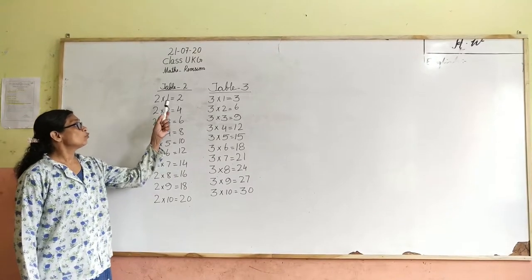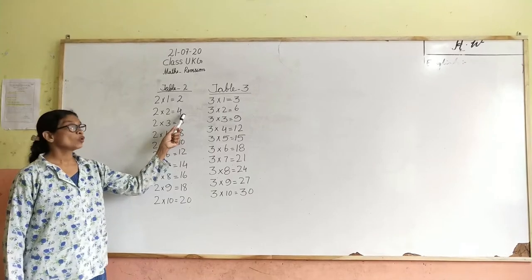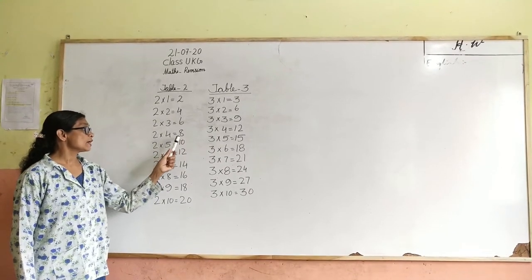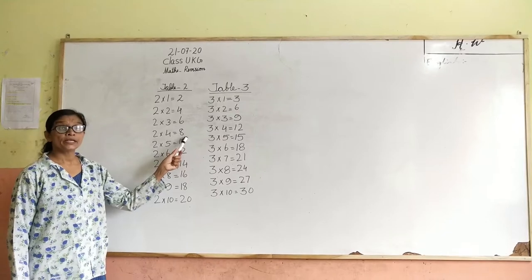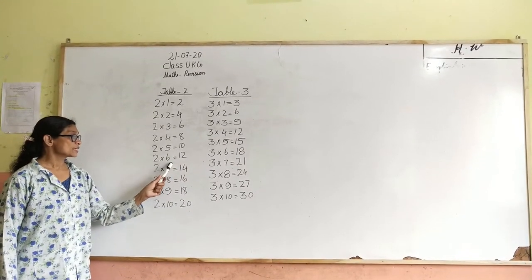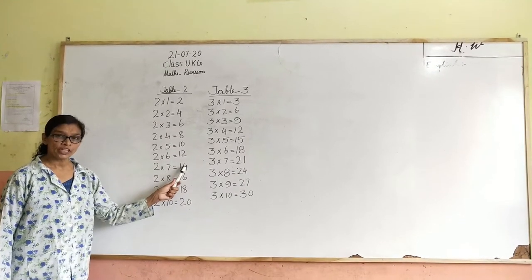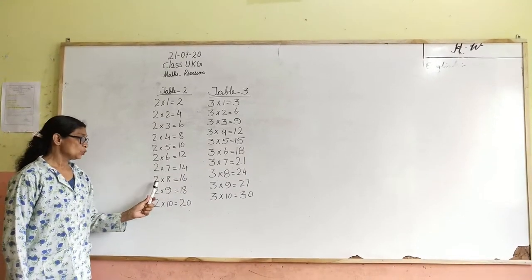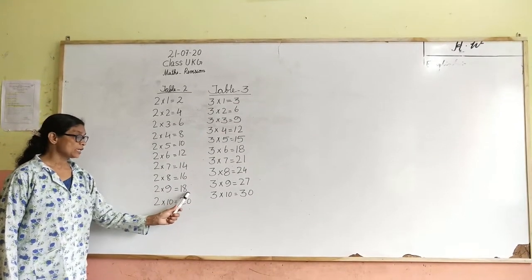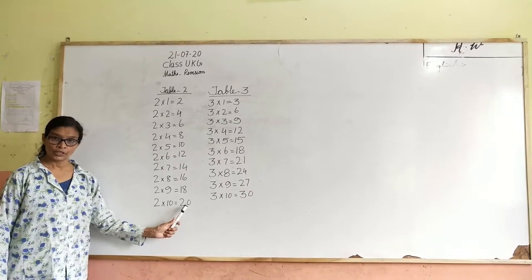2 ones are 2. 2 twos are 4. 2 threes are 6. 2 fours are 8. 2 fives are 10. 2 sixes are 12. 2 sevens are 14. 2 eights are 16. 2 nines are 18. 2 tens are 20.